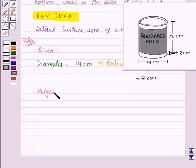Also, the height of the cylinder is equal to 20 centimeters. Now we need to find the area of the label.